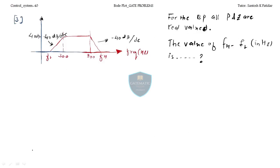Let us come to the third question — very easy. All poles and zeros p and z are real valued. We need to find FH minus FL in Hertz. The slope of one line is minus 40 dB per decade, and the slope of another is plus 40 dB per decade. The magnitude of the flat portion is 40 dB.